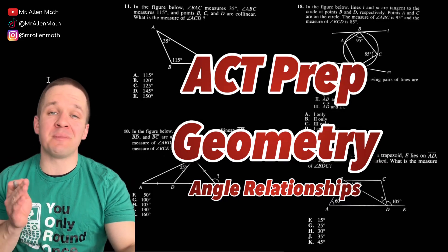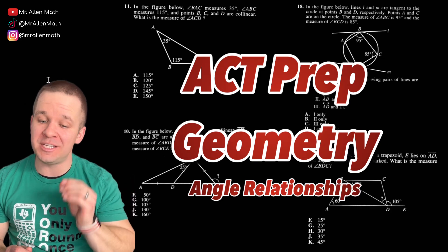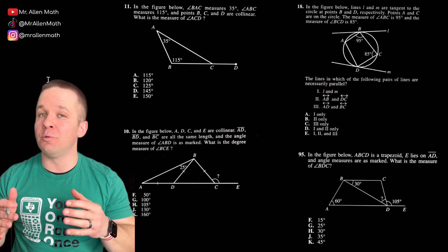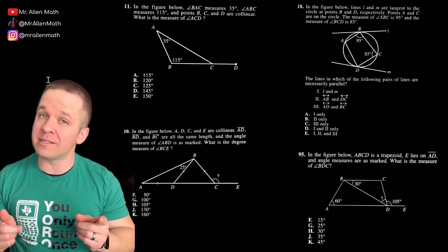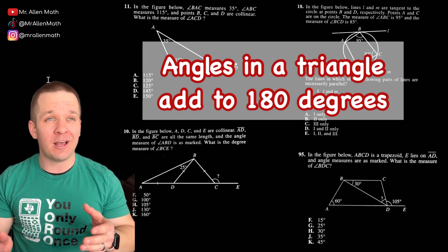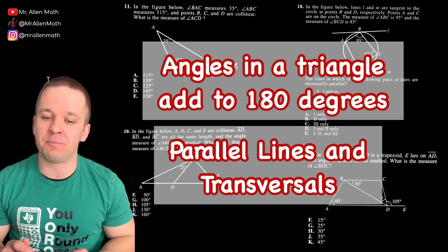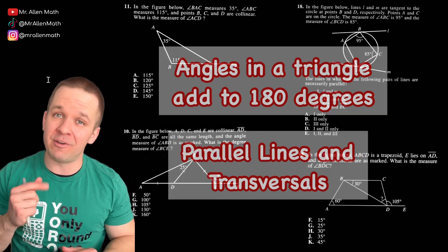What's poppin' dogs? Mr. Allen here with some ACT prep. I got four geometry problems coming your way that you see on the screen here, and they all deal with angle relationships, which means I gotta remember that there's 180 degrees for all three angles in a triangle, and parallel lines, transversals, those angle relationships are also going to come into play. So let's get started with number 11 at the top left.